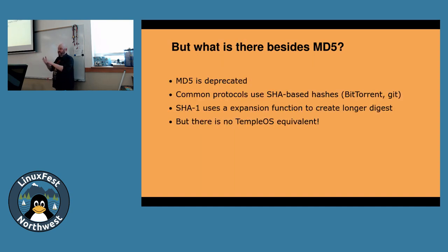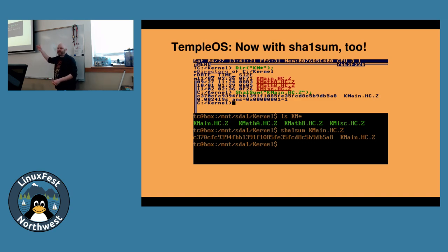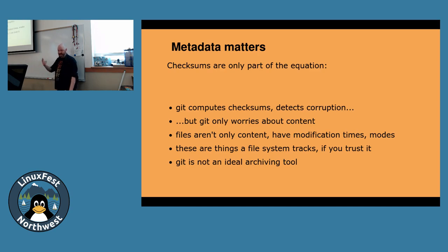But MD5 is deprecated — it's ancient. Pretty much everyone has moved to SHA-1 by now. BitTorrent uses SHA-1. Git specifically uses SHA-1 to compute its hashes. There was no TempleOS equivalent for SHA-1, but there is now. Same checksum in TempleOS as in Linux — this is the same VM but different instances of running one OS versus the other. So you've got MD5 now, you've got SHA-1 now.